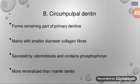Number two, circumpulpal dentine. This forms the remaining part of primary dentine. The matrix has smaller diameter collagen fibers. It is secreted by odontoblasts and contains phosphorine. It is more mineralized than mantle dentine.